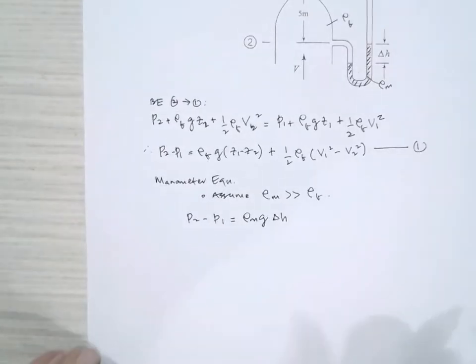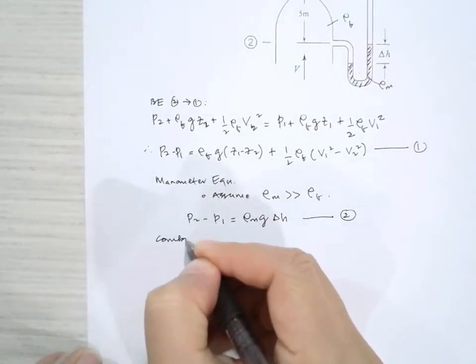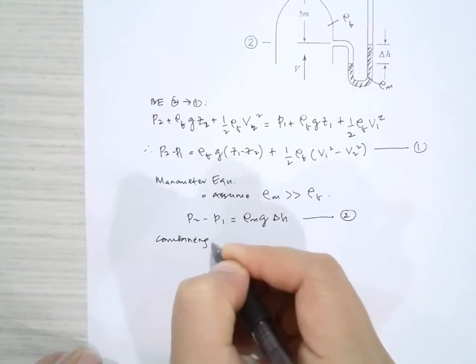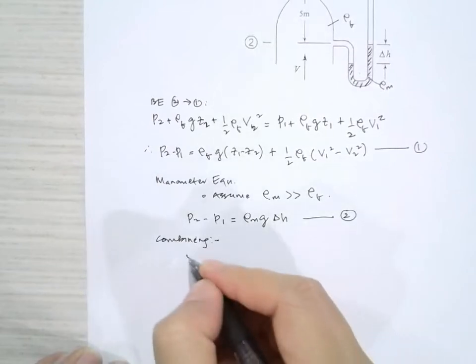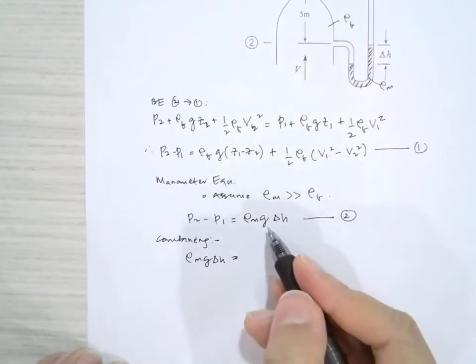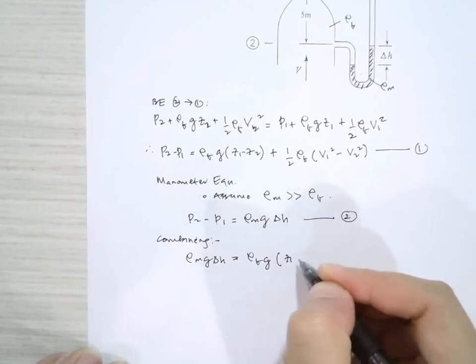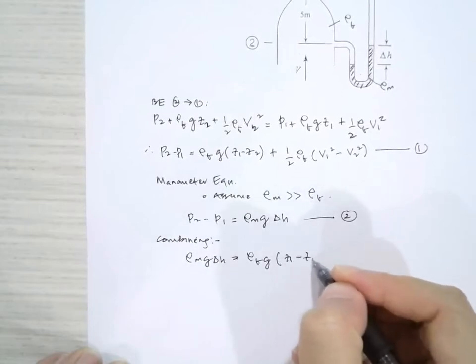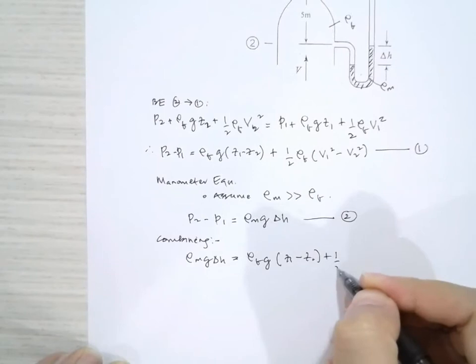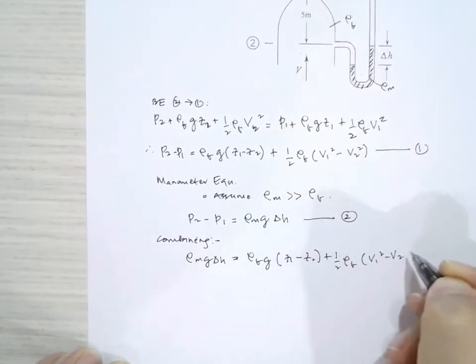Now we can combine the two equations. Let's call that one equation 2. Combining the two equations, what we'll get is rho M G delta H from this equation, which must be equal to rho F G times Z1 minus Z2 plus half rho F times V1 squared minus V2 squared.